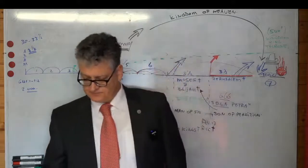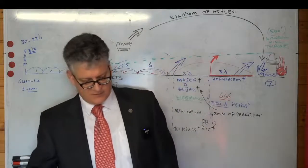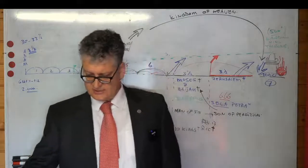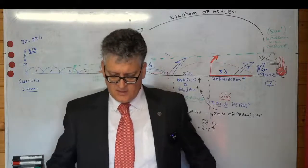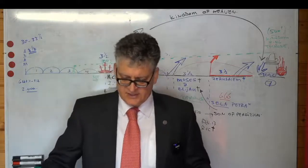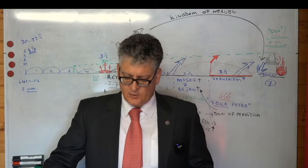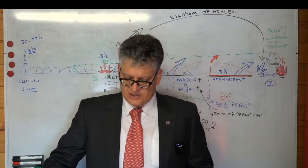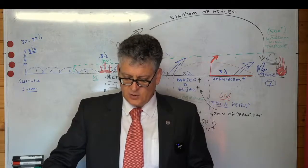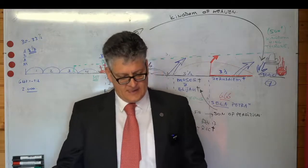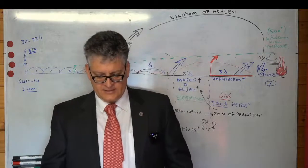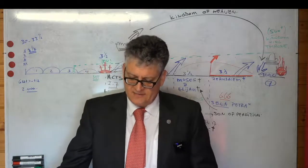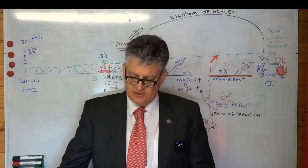We read in Revelation 11, verse 7. When they shall have finished their testimony, the beast that ascended out of the bottomless pit shall make war against them and shall overcome them and kill them. And their dead bodies shall lie in the street of the great city, which spiritually is called Sodom and Egypt, where also our Lord was crucified. Here these two men have their testimony finished after three and a half years. That beast comes up out of the bottomless pit.